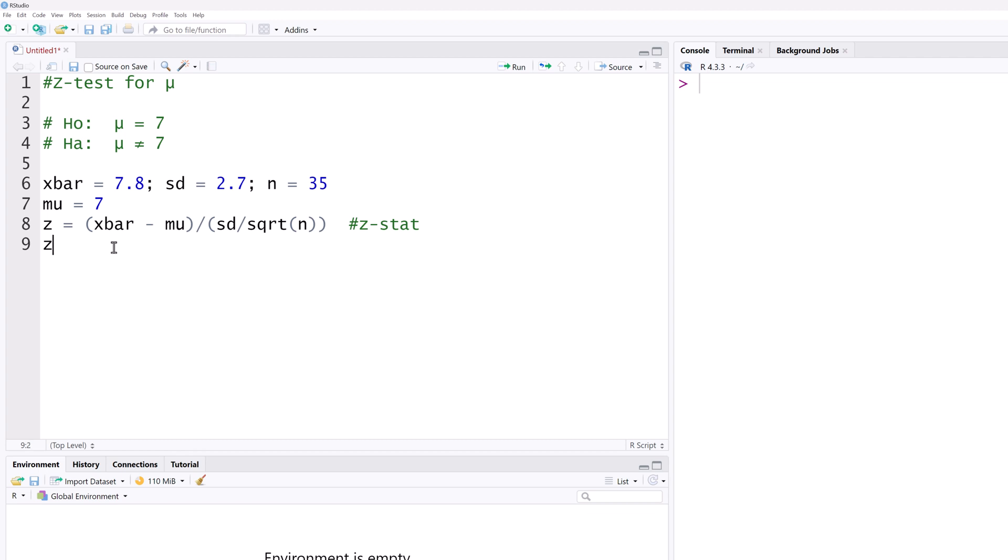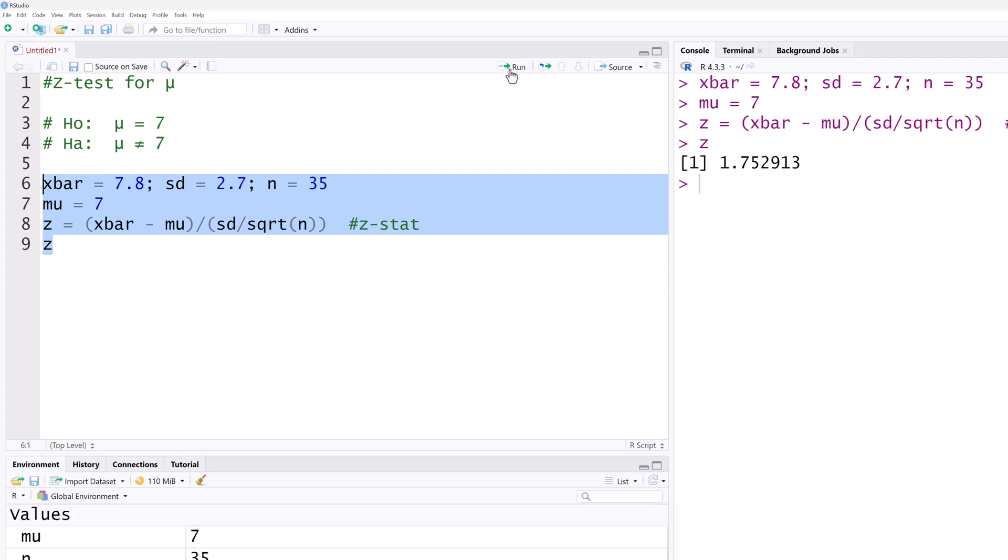I'll type Z again here to display its value. I'll select all the statements and click Run. You can see the Z value here as 1.75.